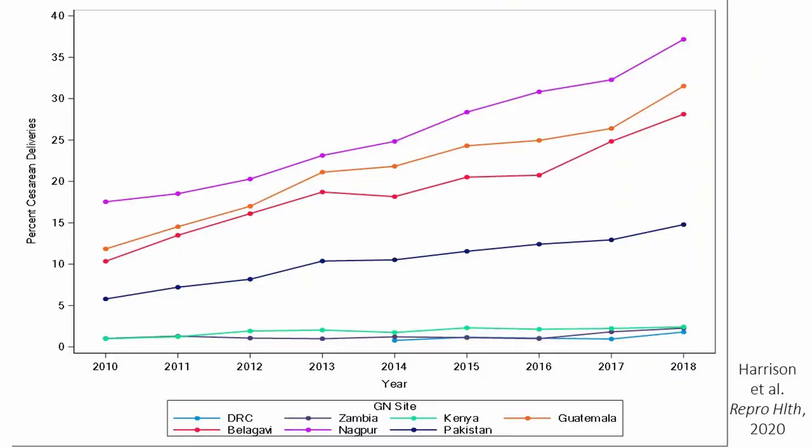Updated global network data through 2018 shows we have still not put a dent in cesarean birth rates in the sub-Saharan African setting. Pakistan stands out somewhat in the middle, and some non-African sites now exceed 35%. This raises the question of whether Southeast Asia might now be showing higher rates than Latin America. There are two very different stories: settings where cesarean birth is rapidly increasing, and settings — Sub-Saharan Africa — where it remains stagnant.